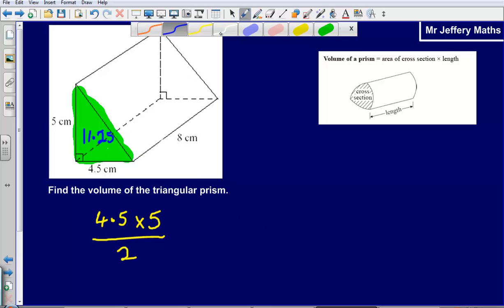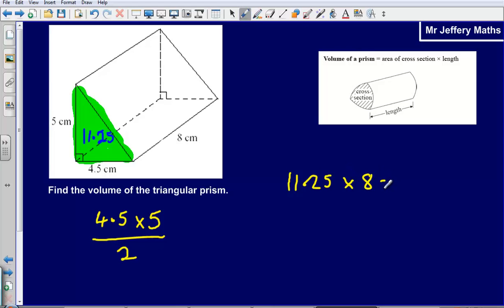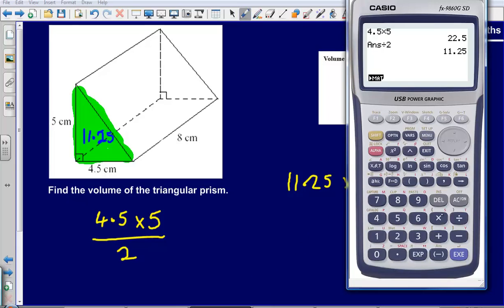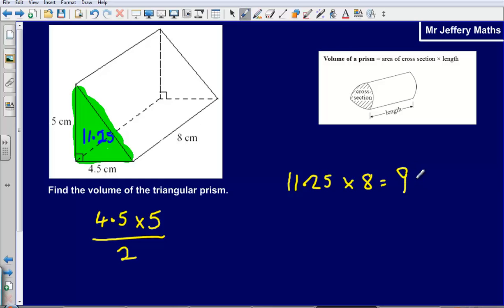That length is 8 centimeters, so I'm simply going to take 11.25 and multiply it by the length, which is 8. Times by 8 gives us an answer of 90 cm³, because we're dealing with volume. That would be your final answer.